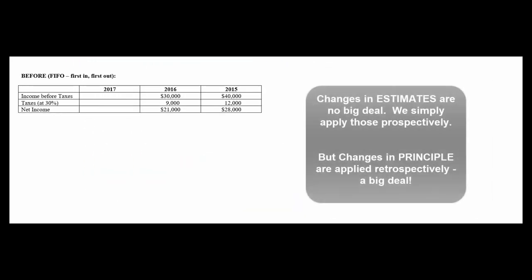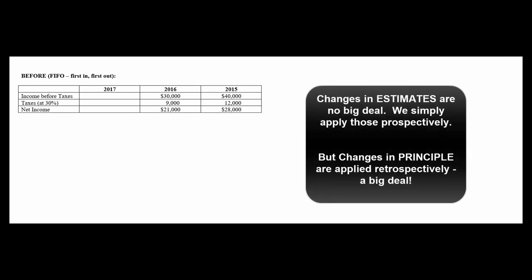The last oddball topic the book talks about at the beginning of Chapter 18 is changes in accounting principles. Changes in estimates are no big deal — if we thought our equipment was going to last 20 years and it turns out it'll last 25, we just change our depreciation schedule going forward prospectively. But if we make a change in accounting principle, we have to go back to the beginning of time and restate all our financials from the day we opened our doors, which is why we try to avoid it and interpret things as a change in estimate wherever possible.